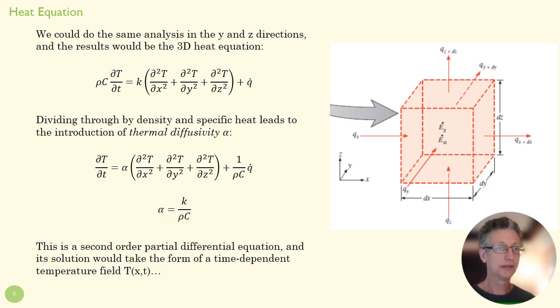So this guy right here—this is kind of our final form of the heat equation. This is what we'll use for the rest of the term when we want to pull out the heat equation. It is a second order partial differential equation: partial because it's in x, y, and t; second order because we've got these second order terms. And the solution takes the form of a time-dependent temperature field. In other words, T at all of the possible positions at all of the possible times, from an initial condition to a final condition.